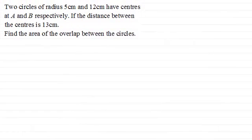Hi there. Now in this question we're given that two circles of radius 5 centimeters and 12 centimeters have centers at A and B respectively. If the distance between the centers is 13 centimeters, we've got to find the area of the overlap between the circles. So if you'd like to give this a go, just give you a moment then to pause the video.